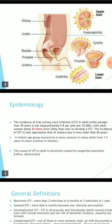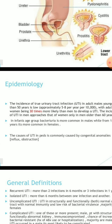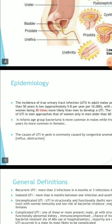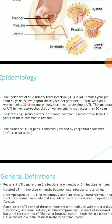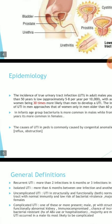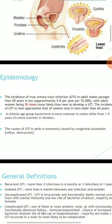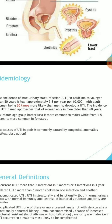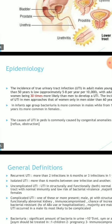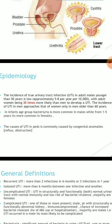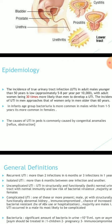Next is epidemiology. The incidence of true urinary tract infection in adult males younger than 15 years is low — approximately 5 to 8 per 10,000 per year — with adult women being 30 times more likely than men to develop a UTI. The incidence of UTI in men approaches that of women only in men older than 60 years. In infants, bacteriuria is more common in males, while from 1 to 5 years it is more common in females.